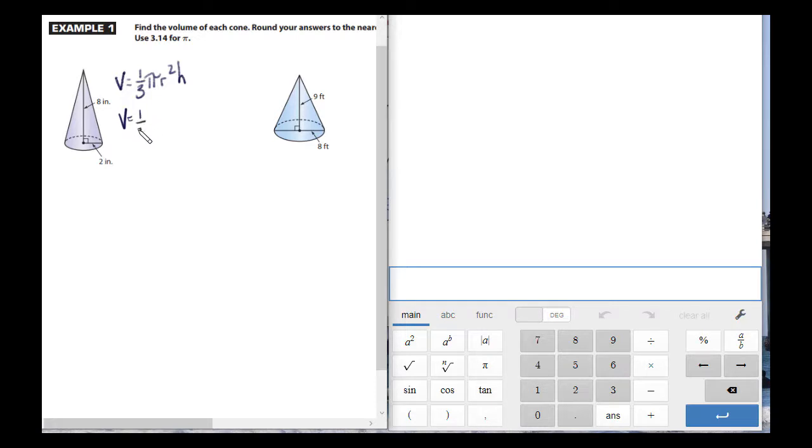We got one-third times π, which is 3.14, and then r squared. You can see r right here because it's already halfway across. The r is two, so two squared, and the height, which is eight inches.